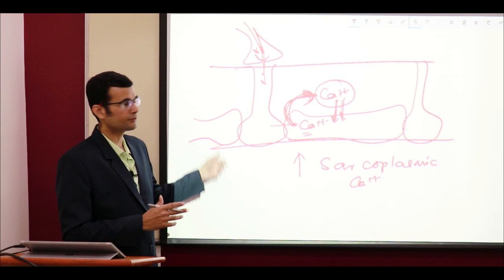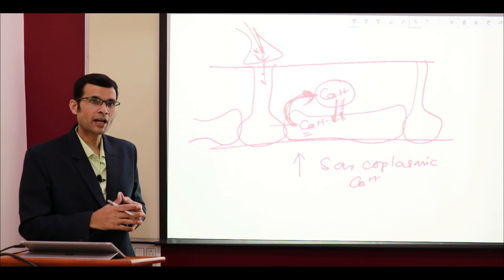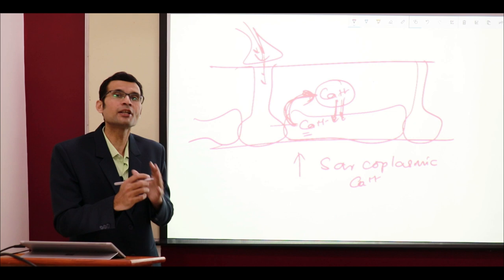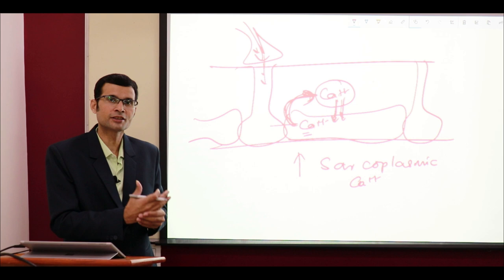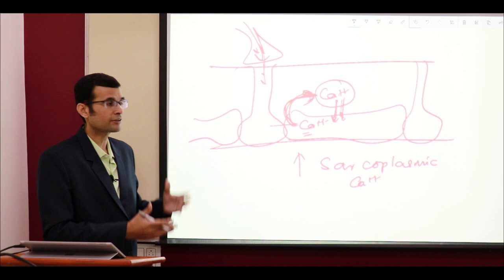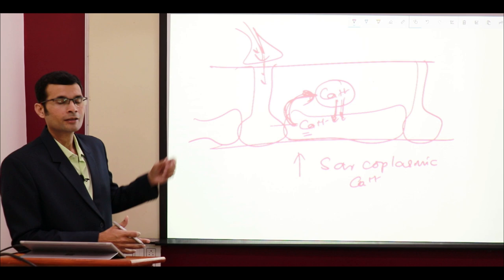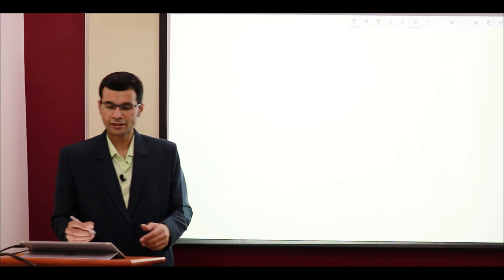Many of us might have experienced physiological tetanus even in routine life. Imagine you are writing an exam; toward the end there is little time left and you need to complete your answers. You send very high frequency stimulation to the hand muscles, and the hand muscles go into a sustained state of contraction — they become stiff. That is physiological tetanus. High frequency stimulation is the basis behind the sustained state of contraction and failure to relax. We all experience such high frequency stimulations resulting in sustained contractions.